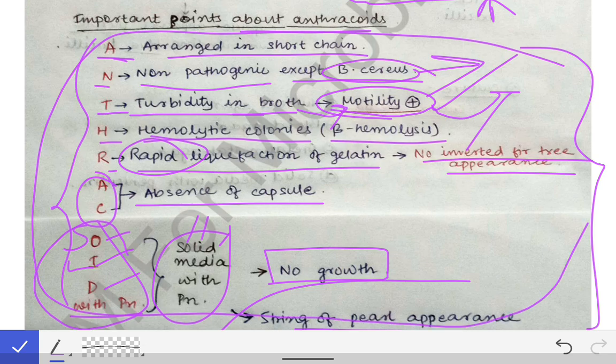To summarize the mnemonic: A for arranged in short chains; N for non-pathogenic, except Bacillus cereus; T for turbidity in broth, meaning motility and flagella are present; H for hemolytic colonies, i.e., beta hemolysis on blood agar.